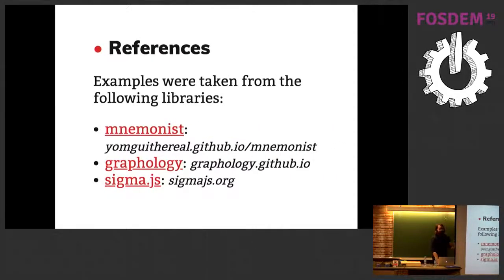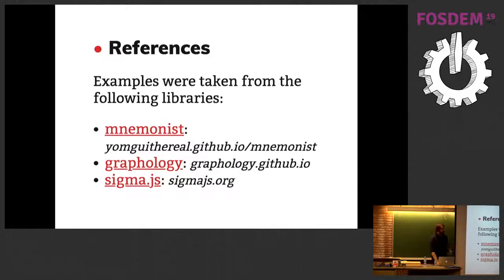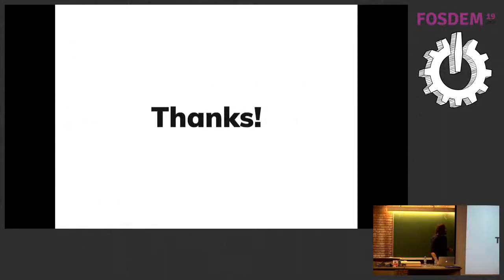Some references: all the examples shown were taken from the following libraries. Mnemonist is a library implementing many data structures in JavaScript with fancy APIs and TypeScript support. Graphology deals with graphs. Sigma.js is a graph rendering engine in the browser using WebGL and so on. That's it — thank you for your time.